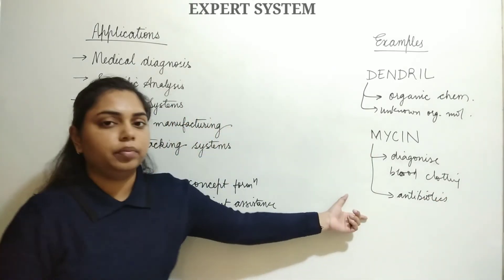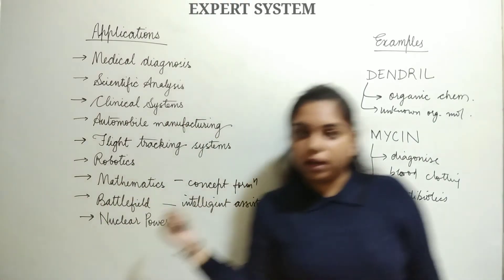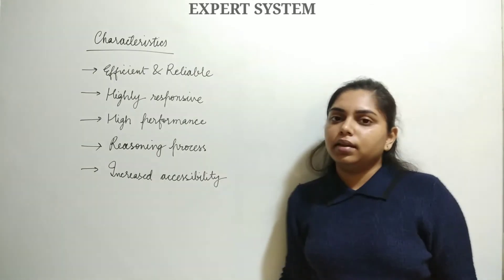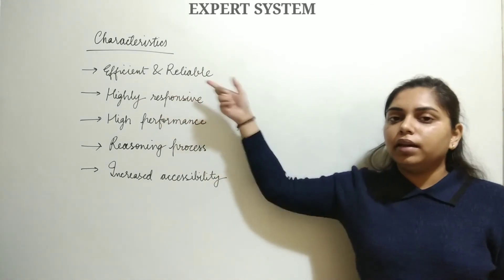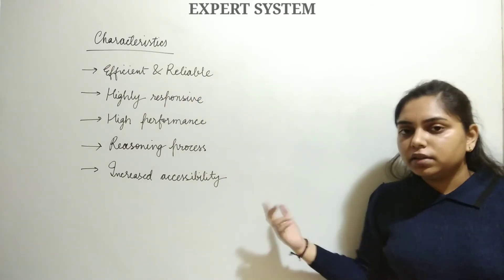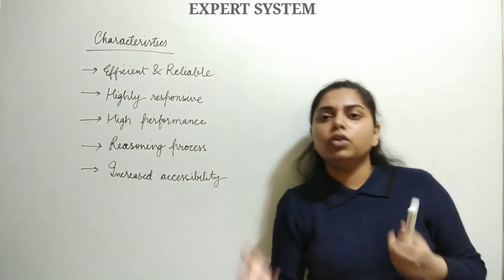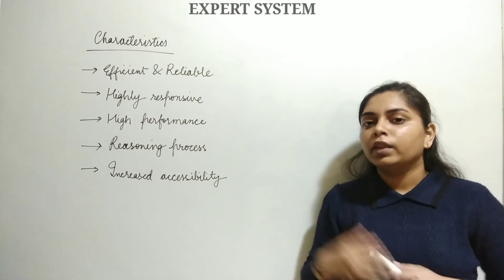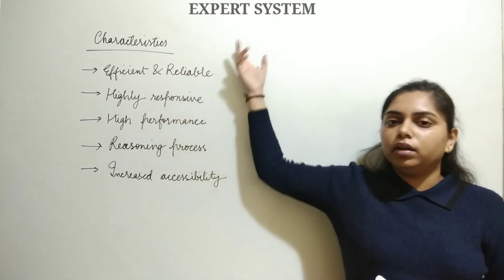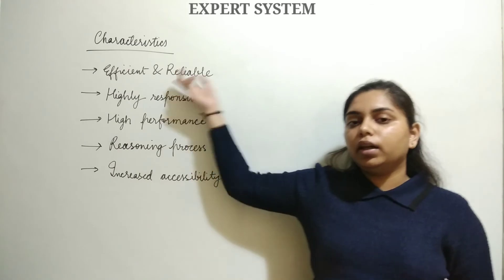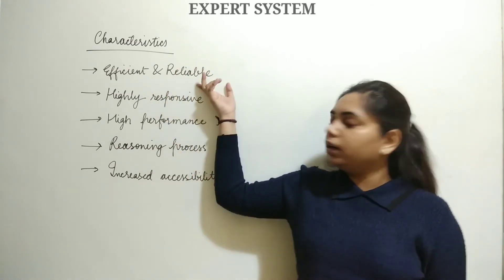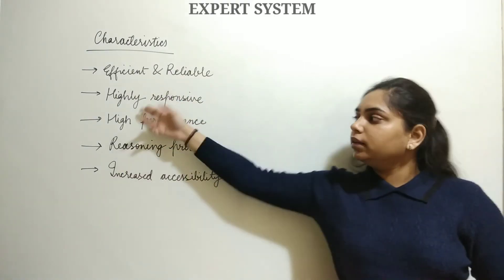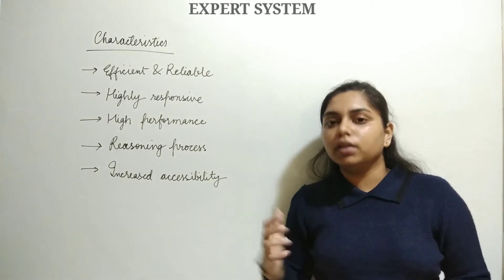I hope the examples and applications of expert systems are clear. Now let's talk about the characteristics. The first characteristic is that expert systems are efficient and reliable, unlike humans who sometimes make wrong decisions. Because it is a computer system, it is efficient, reliable, and highly responsive, capable of solving complex problems easily.